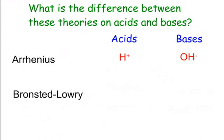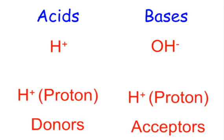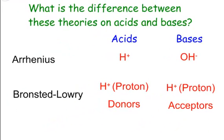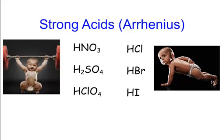Bronsted-Lowry came along and said that acids are actually proton donors — they're actually H+ givers. They give away H+ because acids of course have a lot of H+ or protons. And bases then are proton acceptors. They accept the H+, and we'll be able to see this in our equations in just a second.